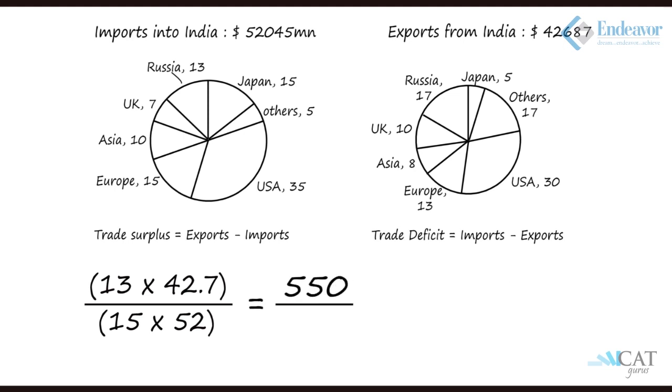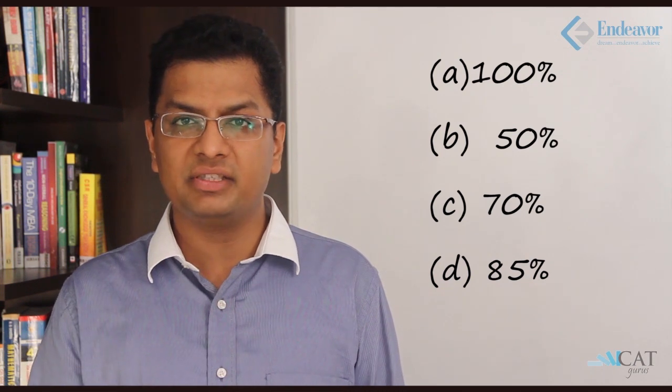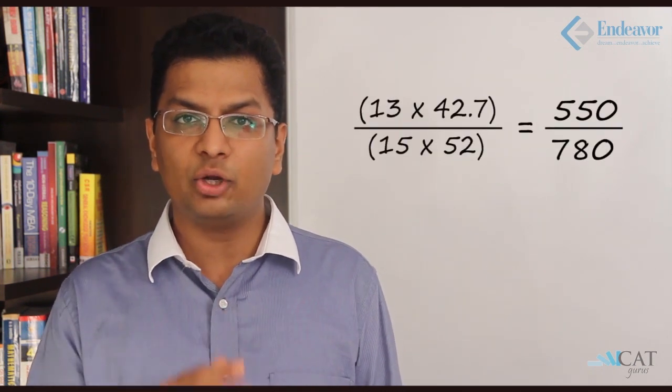So 13 × 42.7 ÷ (15 × 52). Let's simplify this. We get 13 × 42.7 is somewhere close to 550, and 15 × 52 is somewhere close to 780. So 550 ÷ 780 is somewhere close to 70%. If you look at the options, there's nowhere close to 70% anywhere in the others, so the right option here is 70%.